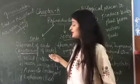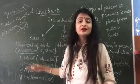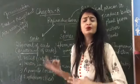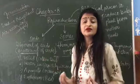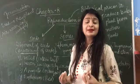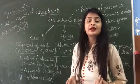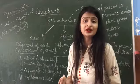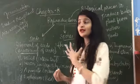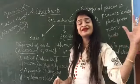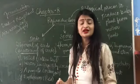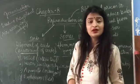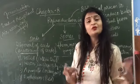The first dispersal method is wind. Wind is very strong, and cotton seeds are very lightweight. Because cotton seeds are lightweight, if the wind comes it will easily carry them, and they will settle in another place and grow into a new plant.